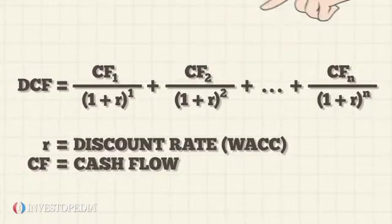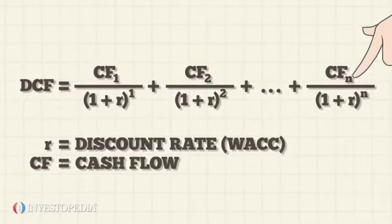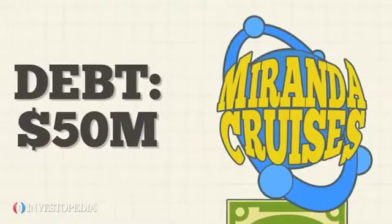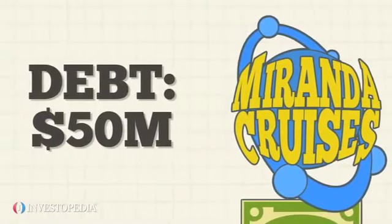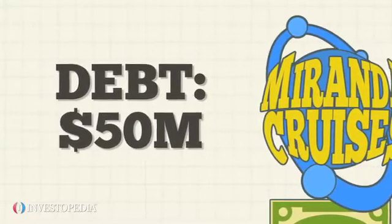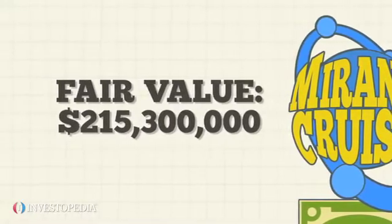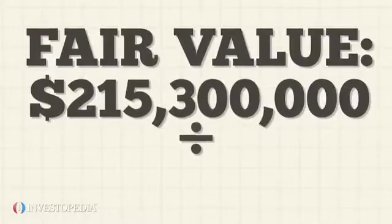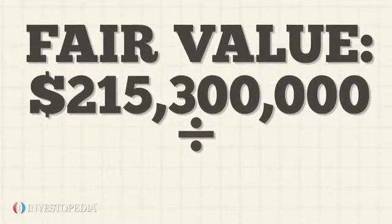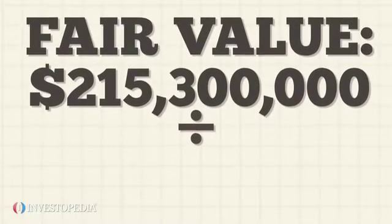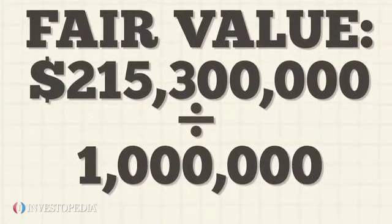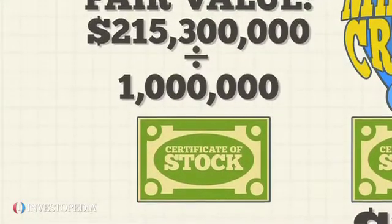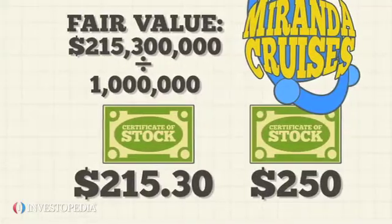Jane uses the formula to calculate enterprise value. She then subtracts the company's net debt from its enterprise value to get its fair value of $215.3 million. Dividing $215.3 million by the company's 1 million outstanding shares, Jane finds that one share of Miranda Cruises is worth $215.30.